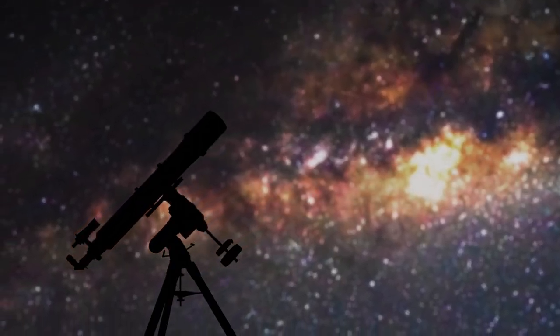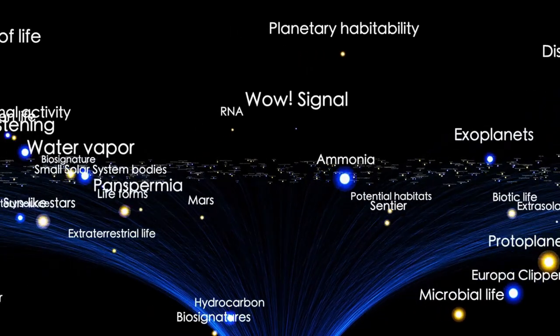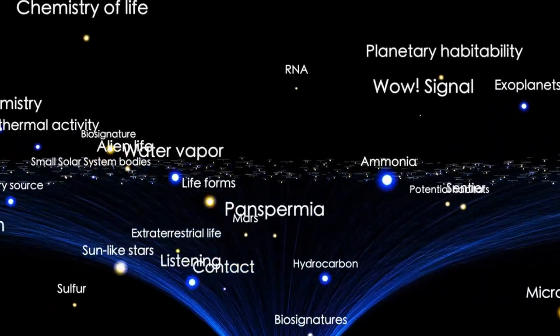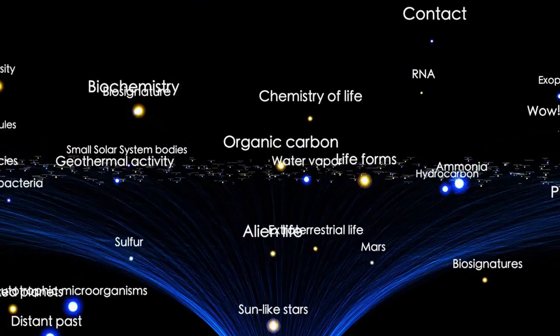Known for his provocative claims, Musk's latest statement has once again dominated headlines. He claims that the supergiant star Betelgeuse, located in the Orion constellation, is about to go supernova.